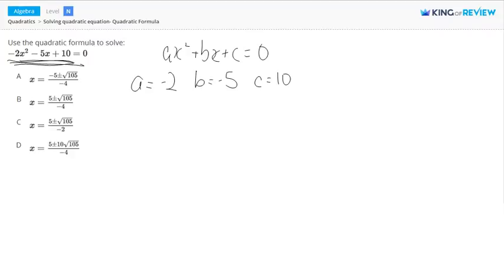And the quadratic formula actually says x is equal to negative b plus or minus square root of b squared minus 4ac divided by 2a.